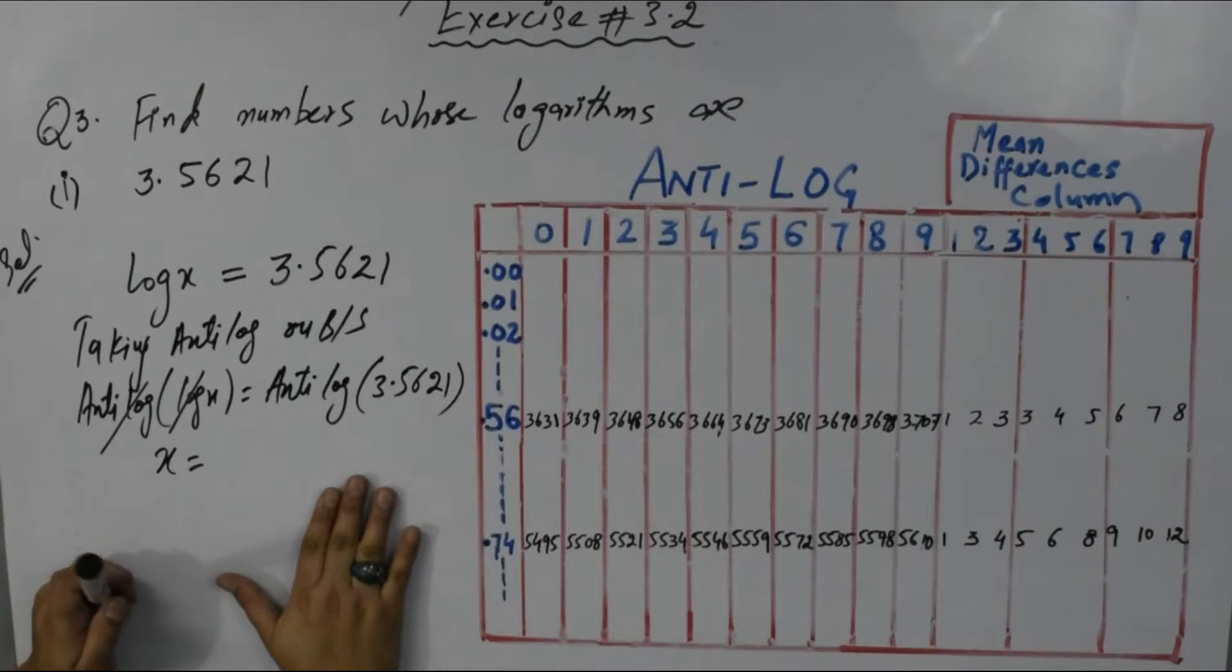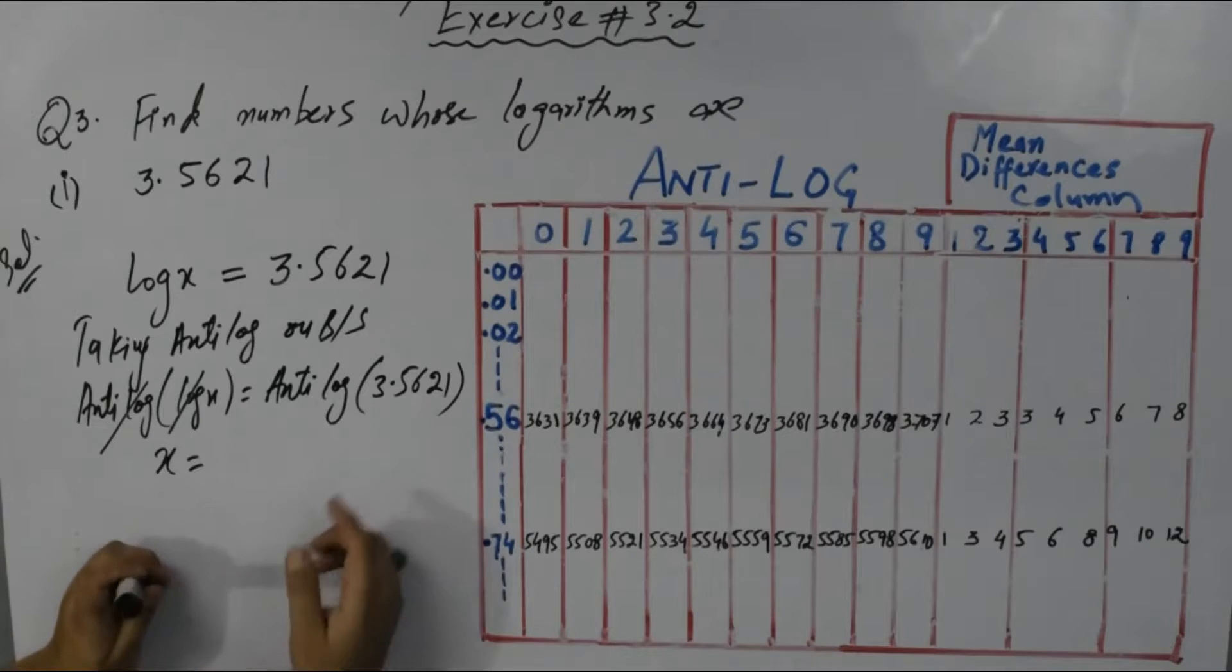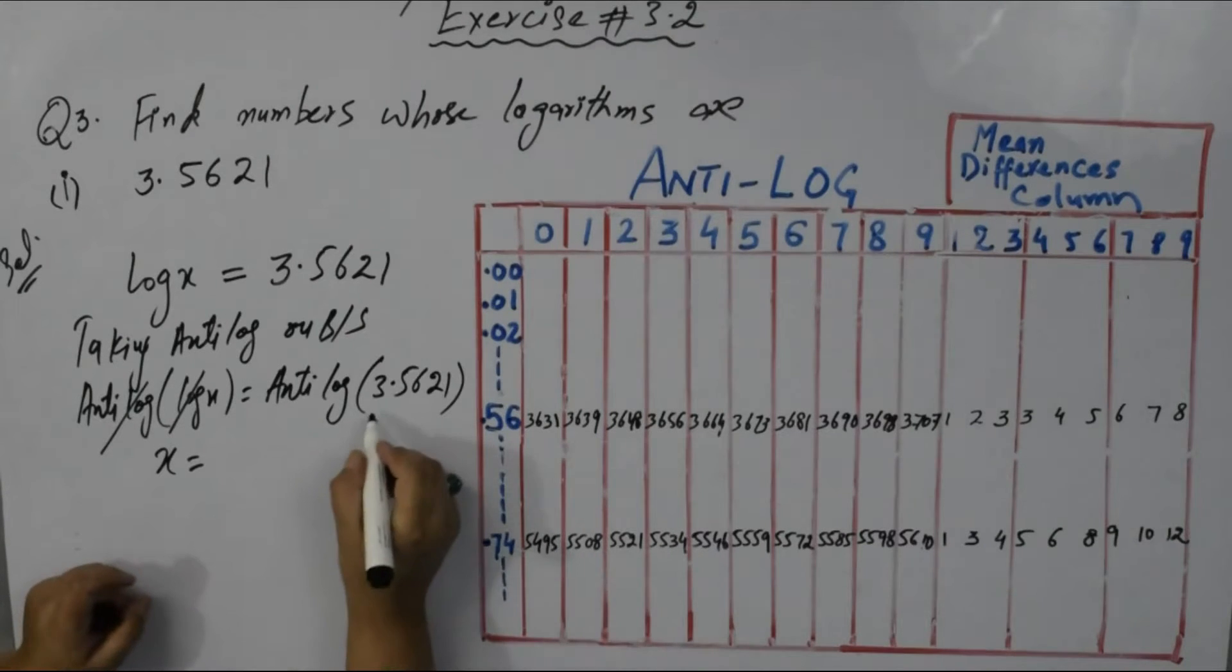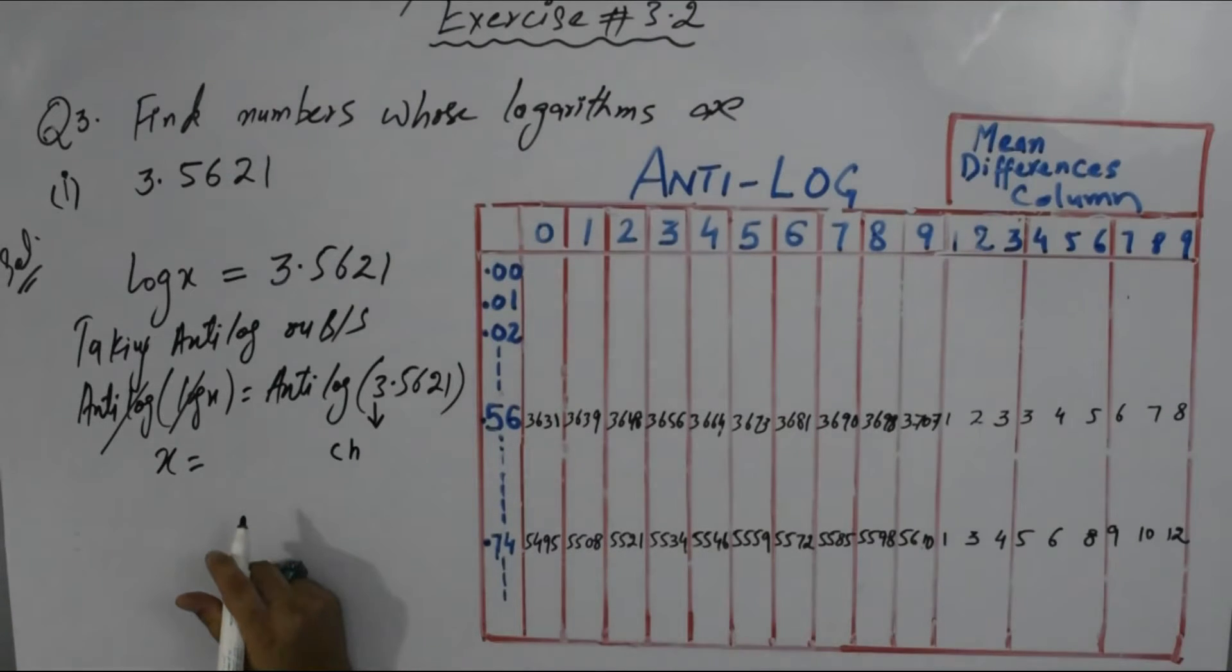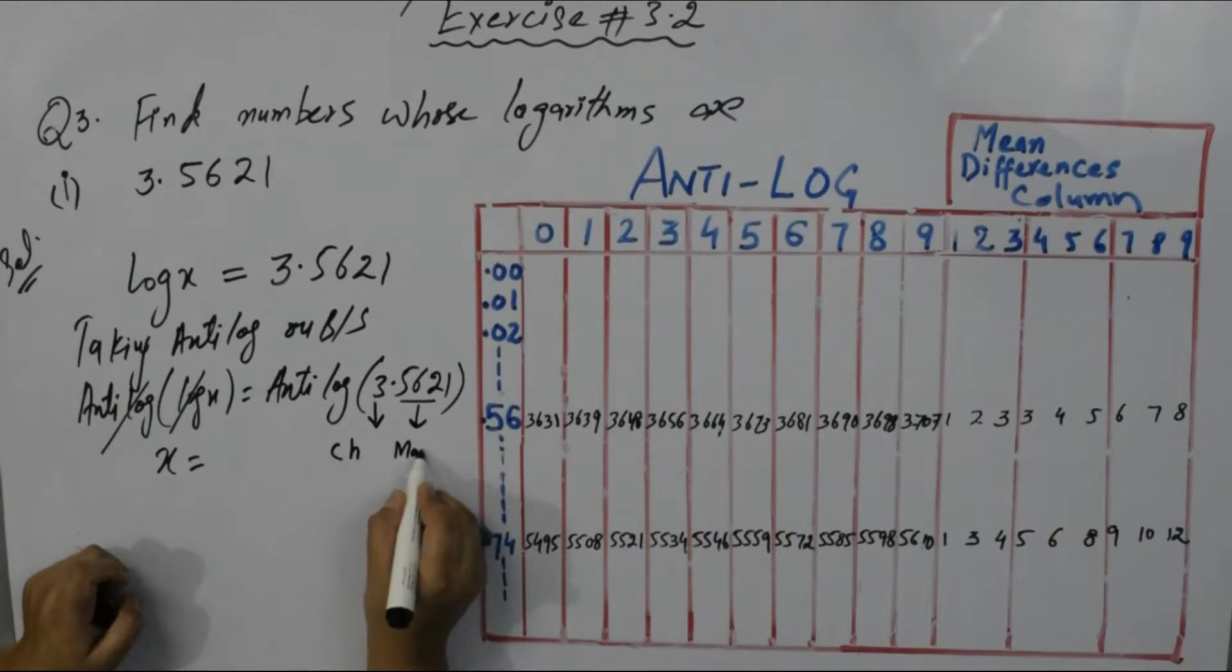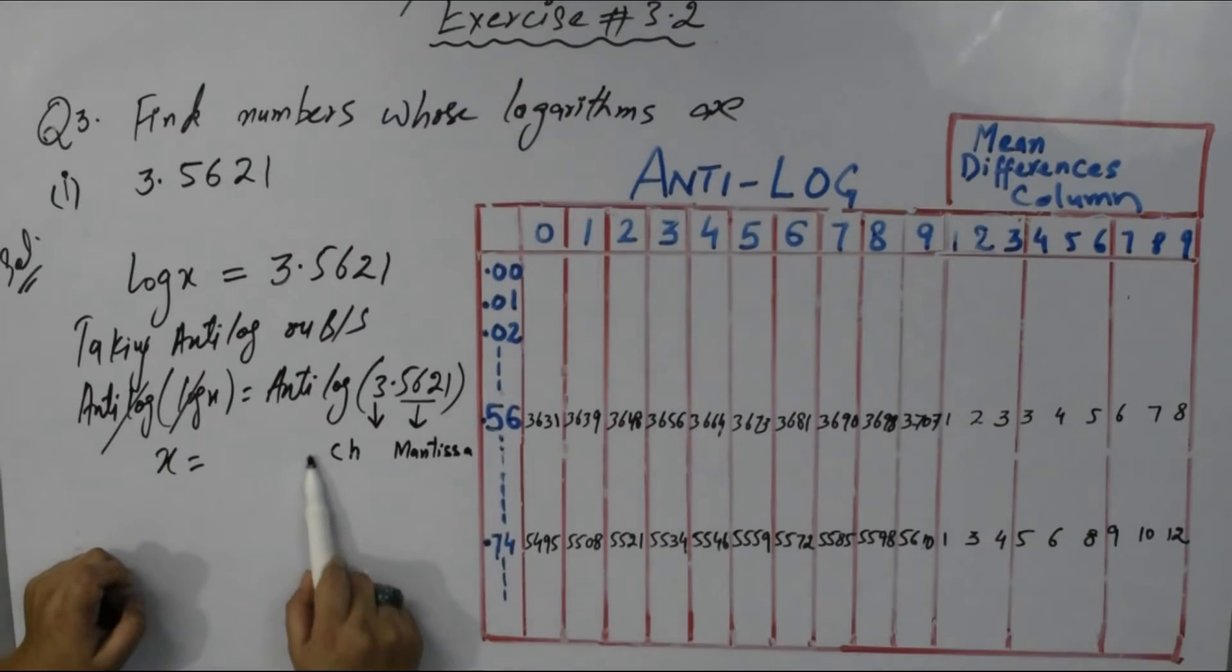Now anti-log of this number - log of a number is given as 3.5621. Three is the characteristic. When we take log of any number, we get characteristic and the other part is mantissa.